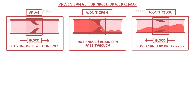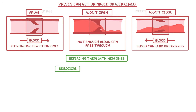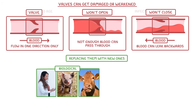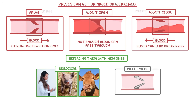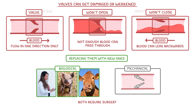Regardless of why it's faulty, we can fix faulty valves by replacing them with new ones, which could be biological valves from another human, or more likely a pig or a cow, or we could use a man-made mechanical valve. Both of these are going to require surgery to put them in though, and there will be an ongoing risk of blood clots.